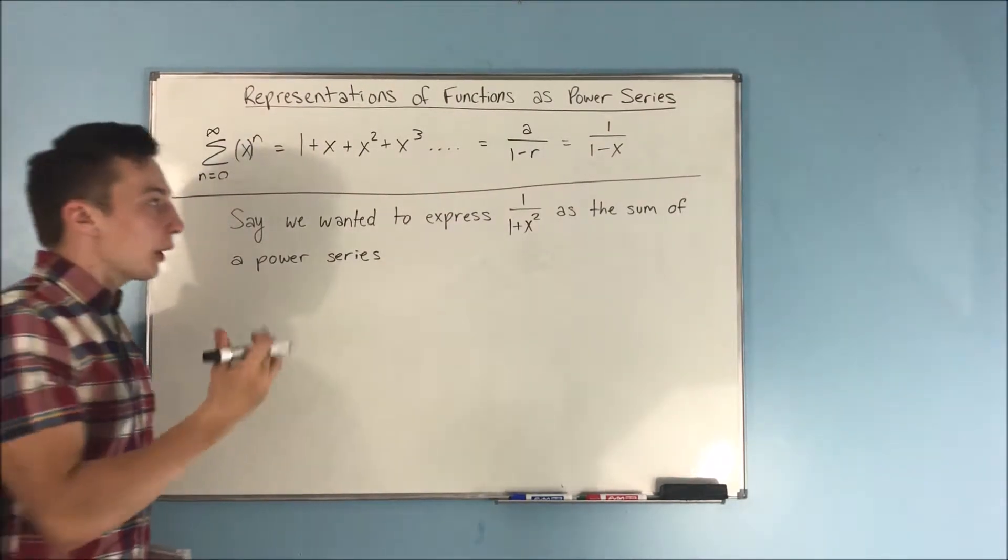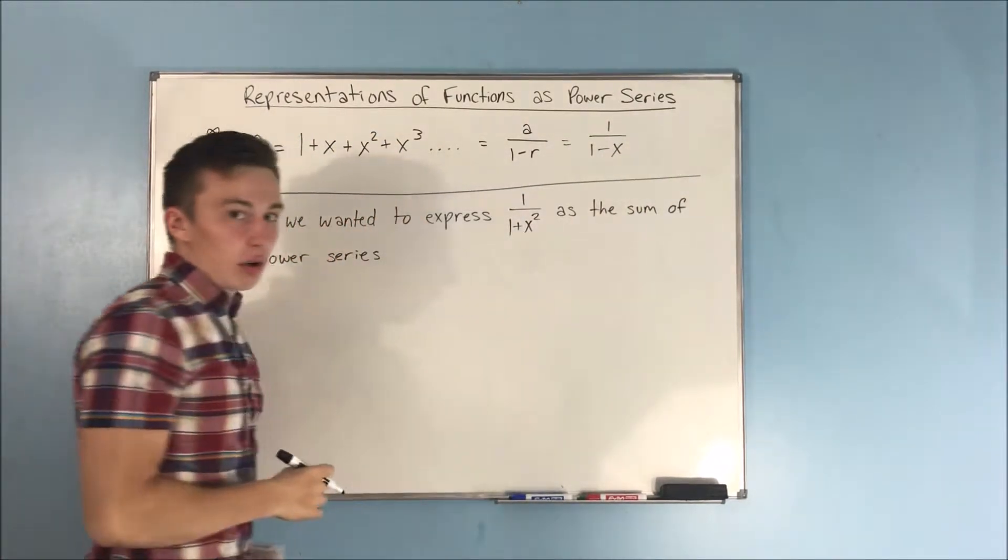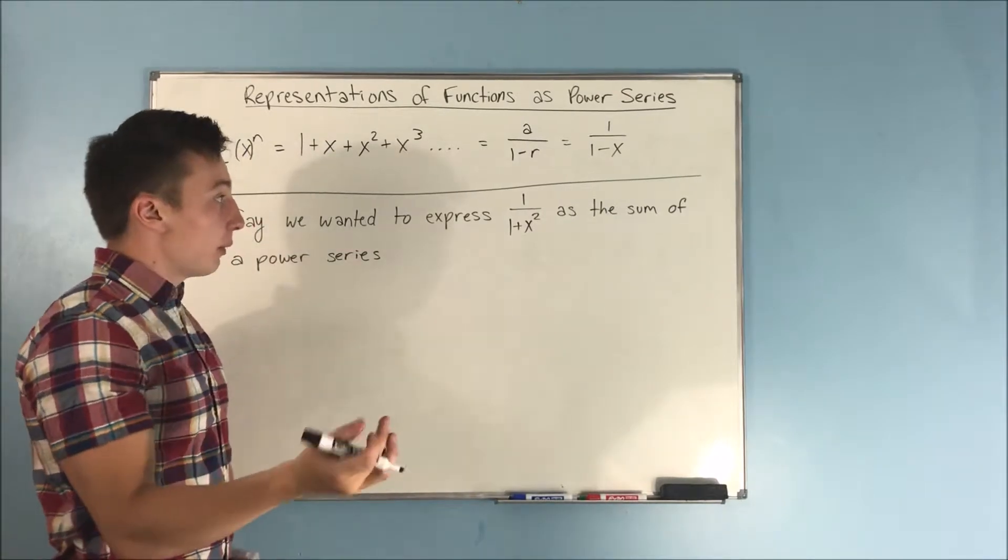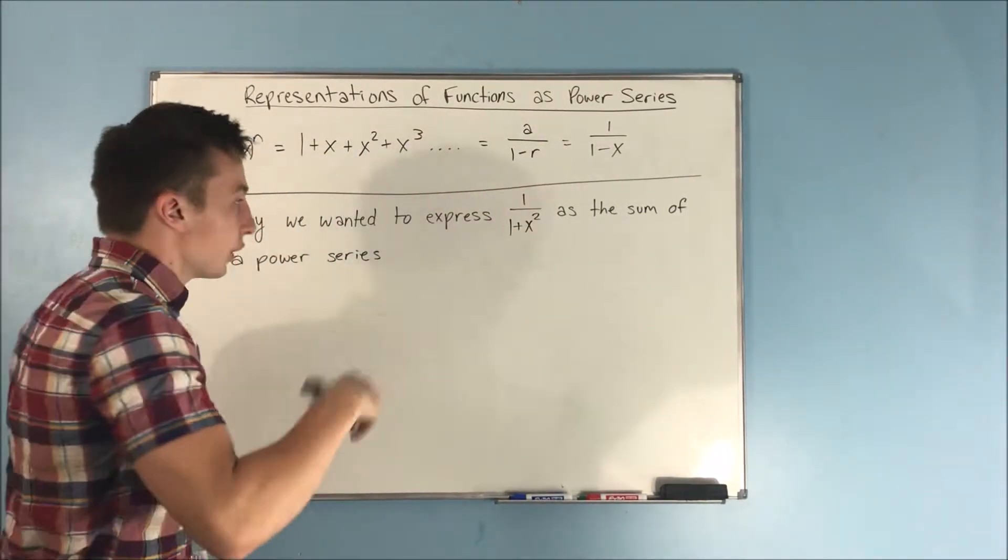Now, how we're going to do that, right? We just want it to be 1 over 1 minus something. We want it to be 1 over 1 minus something. So it can be pretty much anything involving x. So let's try that here.